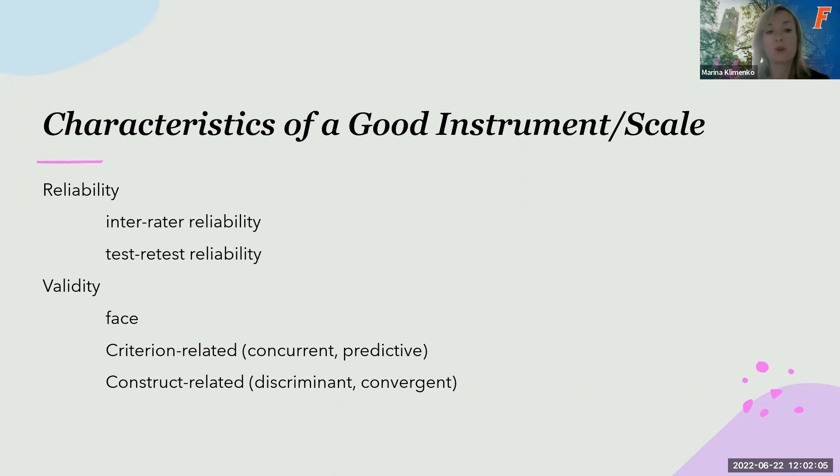We already talked about reliability when we covered content analysis and observational methods, where you've learned about the importance of inter-rater reliability. Essentially, how consistently similar the coding, for example if we talk about content analysis, is between the two or more coders. It's the agreement between the coders or observers. It's the same idea, the reliability, inter-rater reliability.